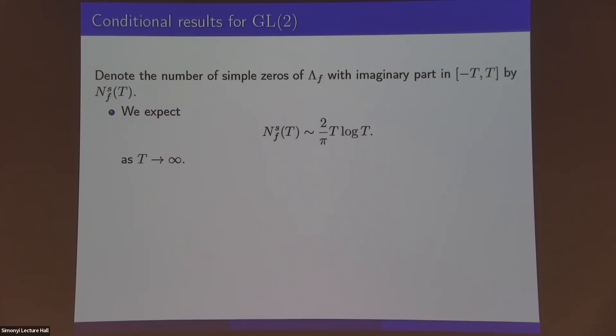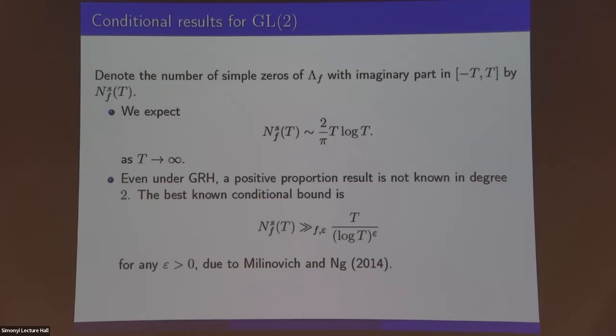So what can we say conditionally? What if we assume the generalized Riemann hypothesis and try to say something about the number of simple zeros? It turns out that even under GRH, it's not known that a positive proportion of the zeros are simple. The best result currently gives this bound of T over an arbitrarily small power of log T, which is still quite far from T log T. And GRH, you mean for the holomorphic functions? Yes, so all the results here will be for holomorphic. Some of them can be generalized to Maass forms.